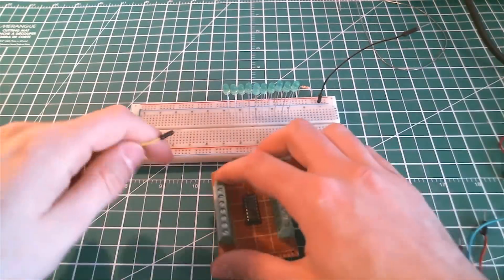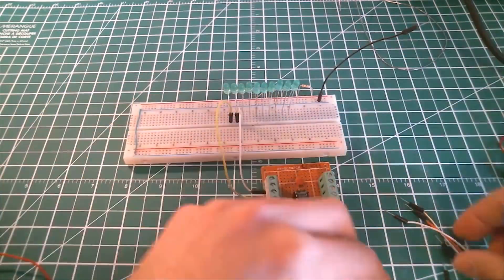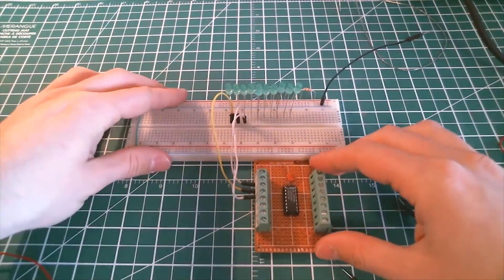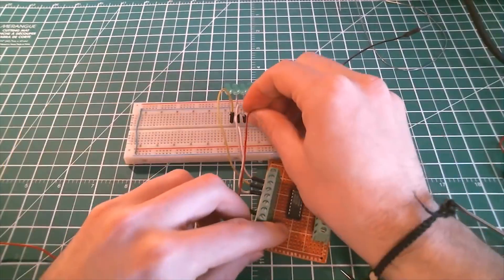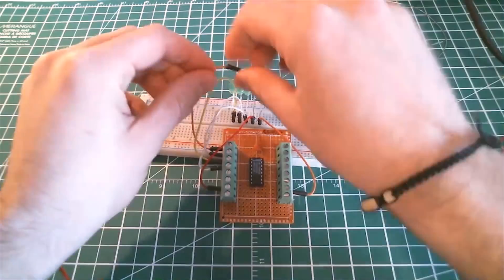Once it's done, plug all of your outputs to their respective LEDs. Output zero will be the first LED of the sequence, the one on the left. Output one is the next, and on and on until all 10 outputs are plugged.